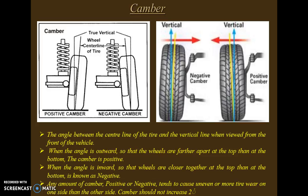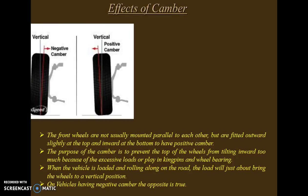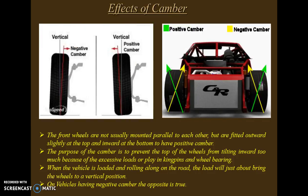Camber is the angle between the center line of the tire and the vertical line when viewed from the front of the vehicle. When the angle is outward so that the wheels are further apart at the top than at the bottom, it is known as positive camber. When the angle is inward so that the wheels are closer together at the top, it is known as negative camber. Any amount of camber tends to cause uneven tire wear, and camber should not exceed two degrees.